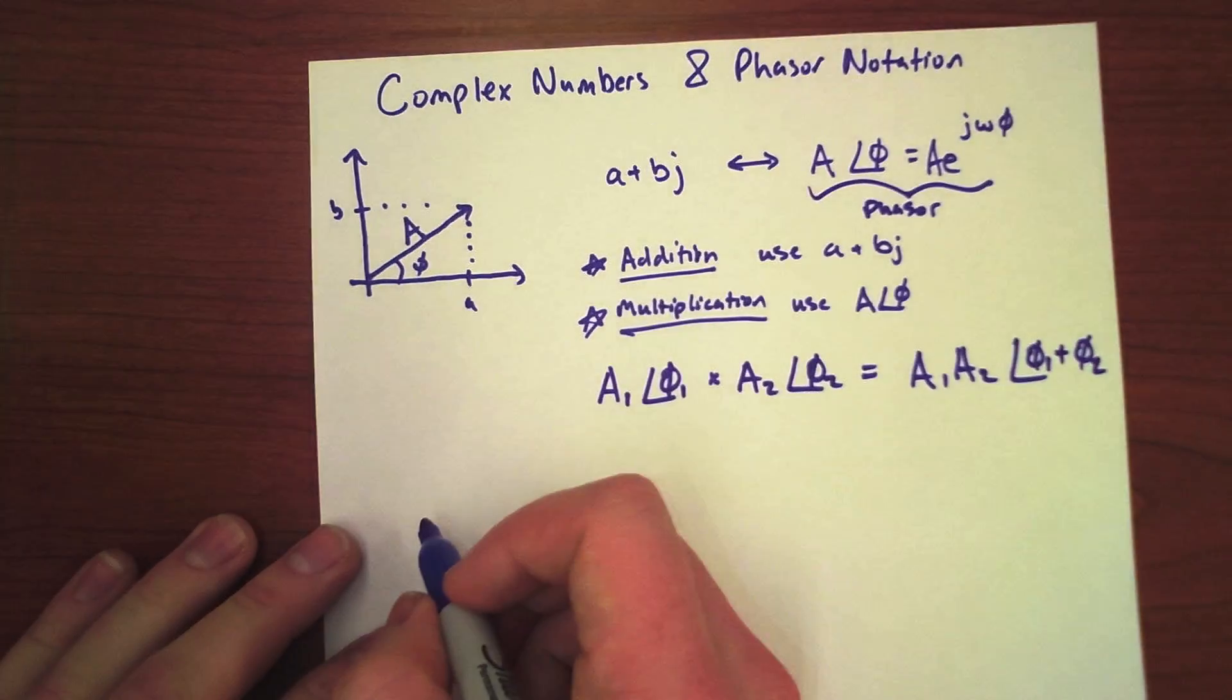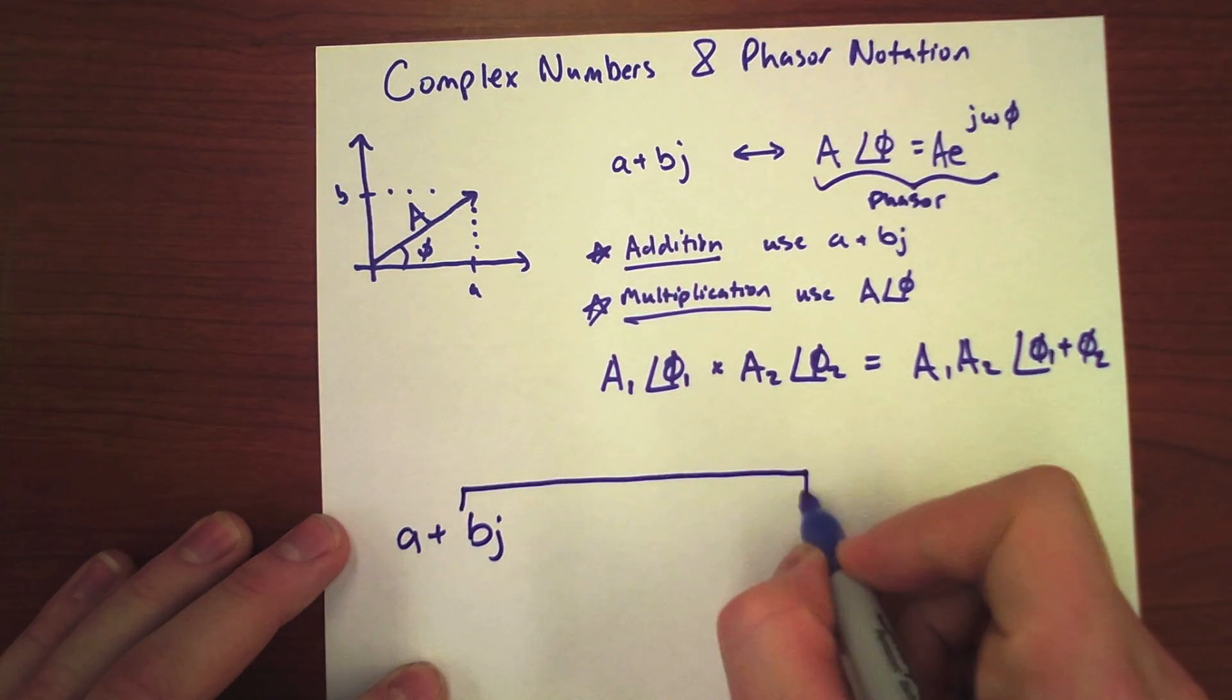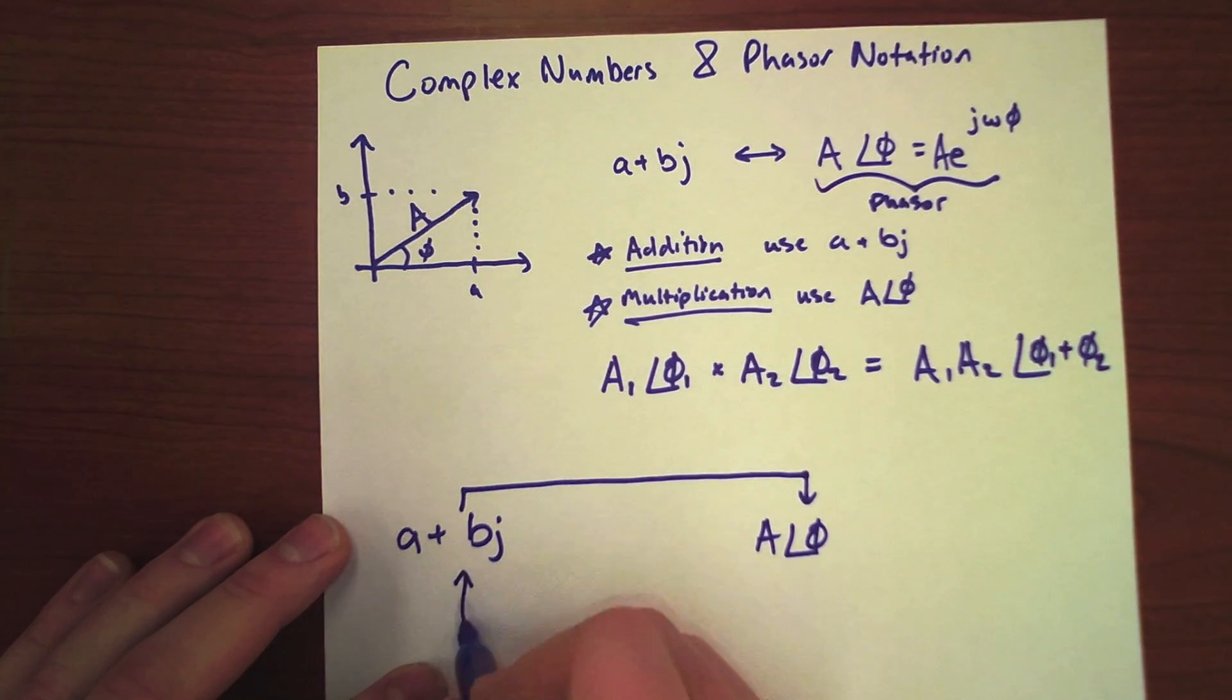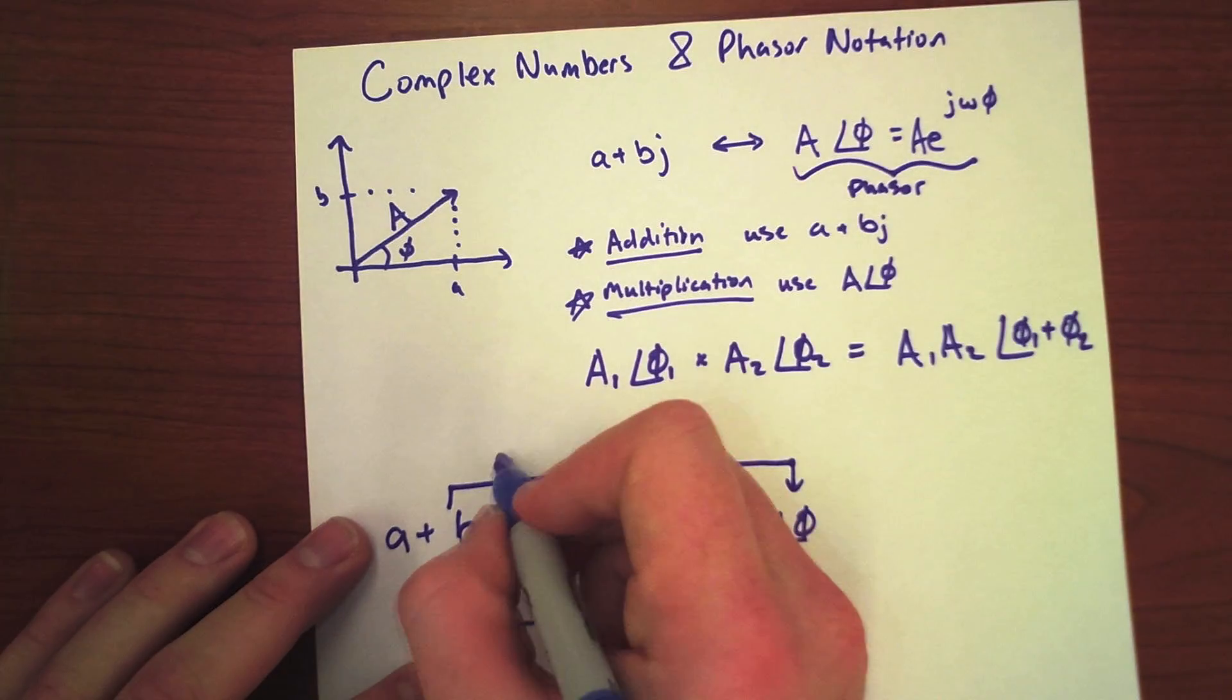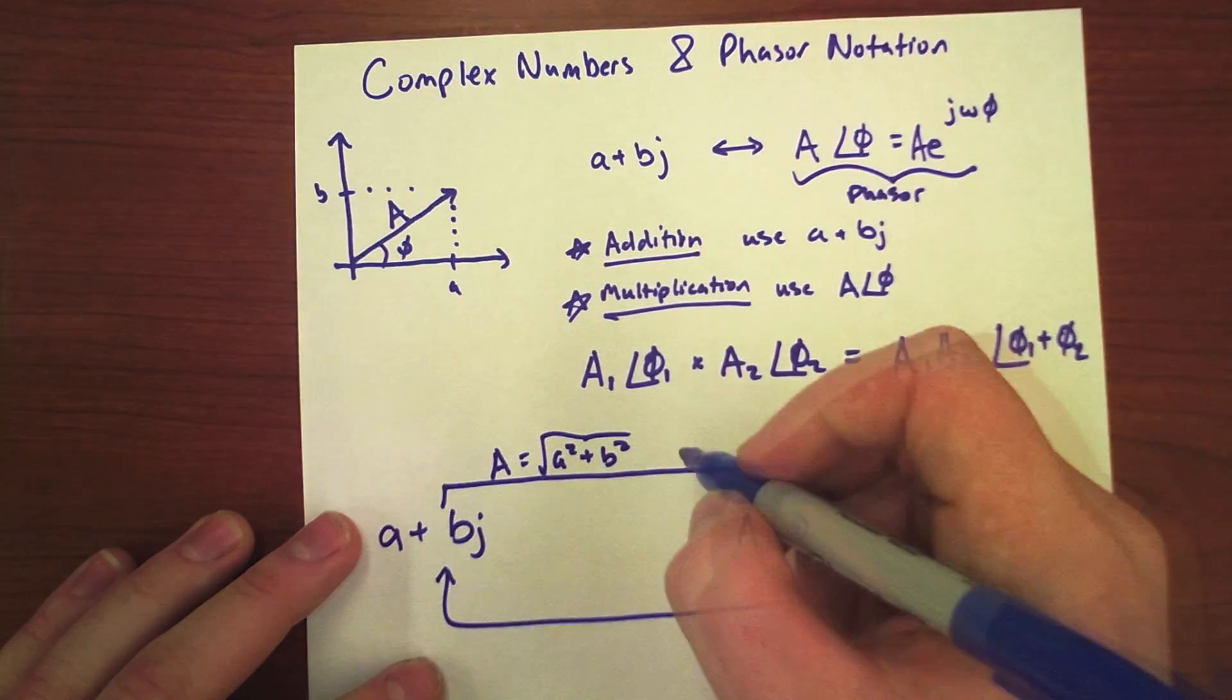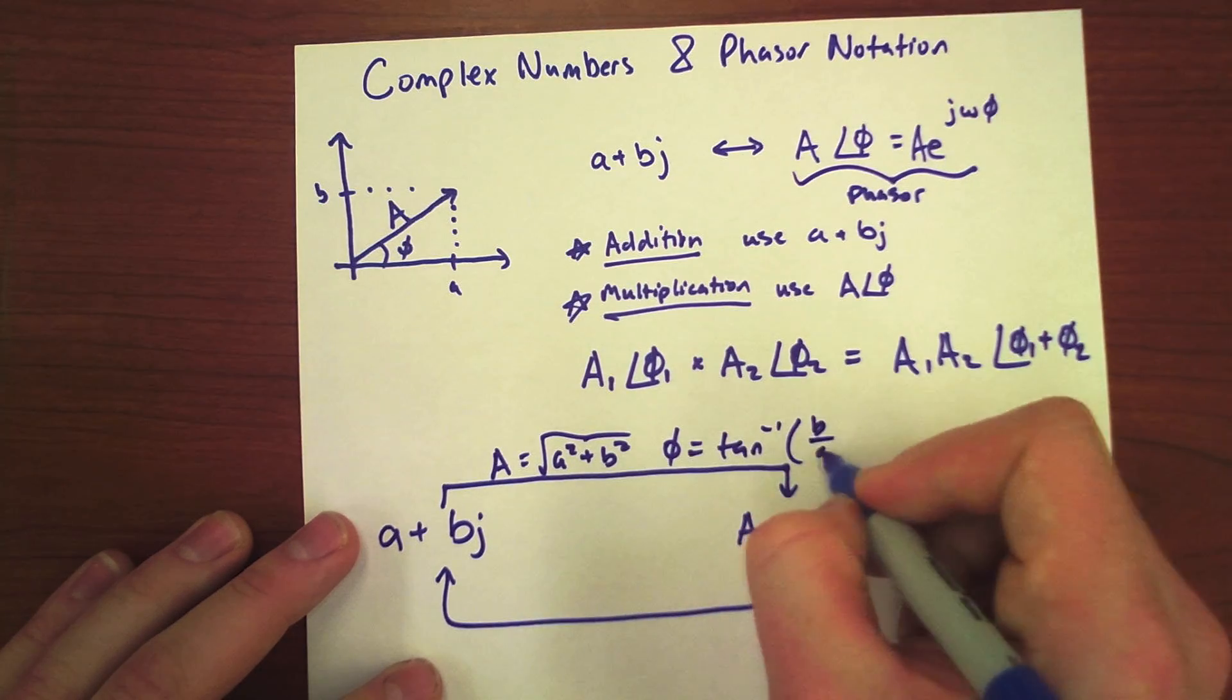So, how do we do this? How do we go from a plus bj to a angle phi? Well, our magnitude is just going to be the square root of a squared plus b squared. You can convince yourself that from the diagram, and our angle is going to be just the tangent inverse of b over a.